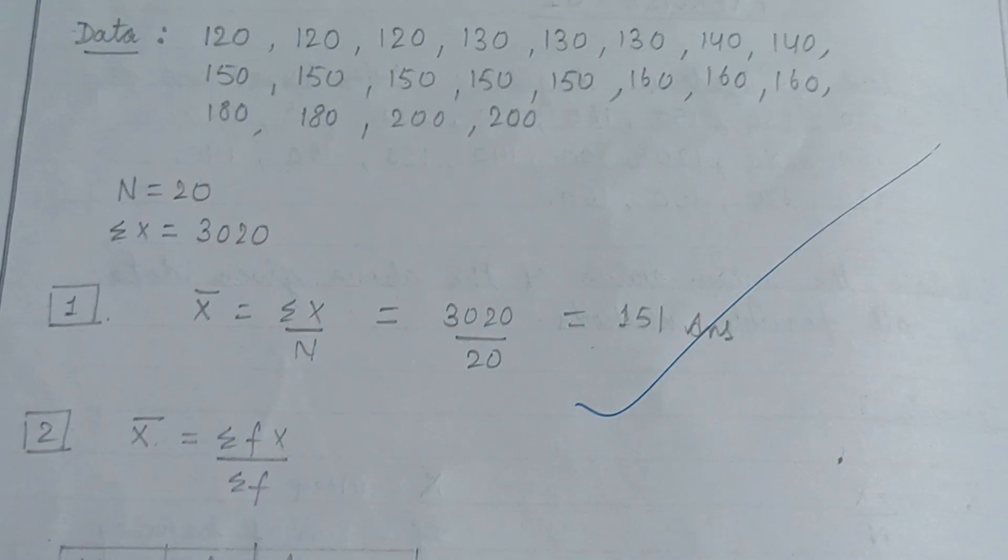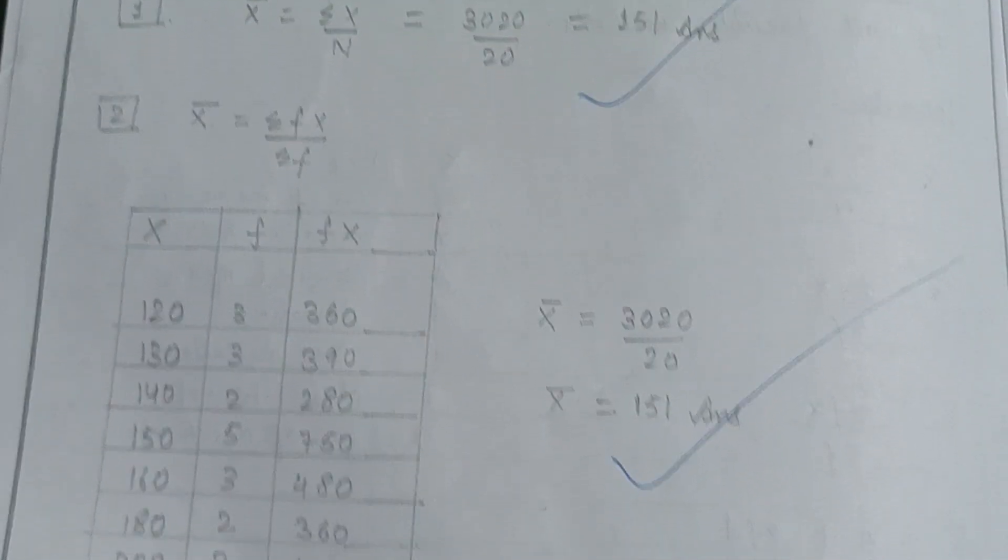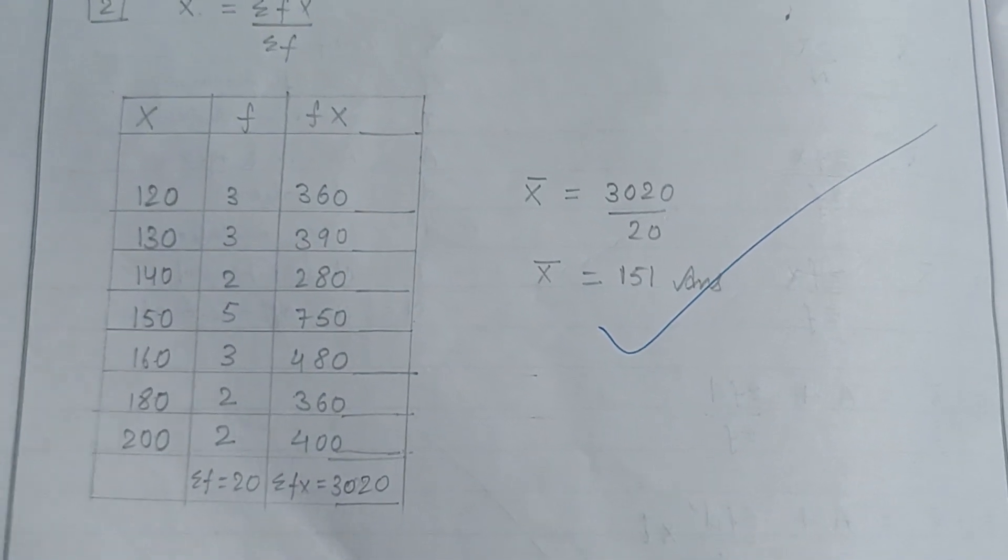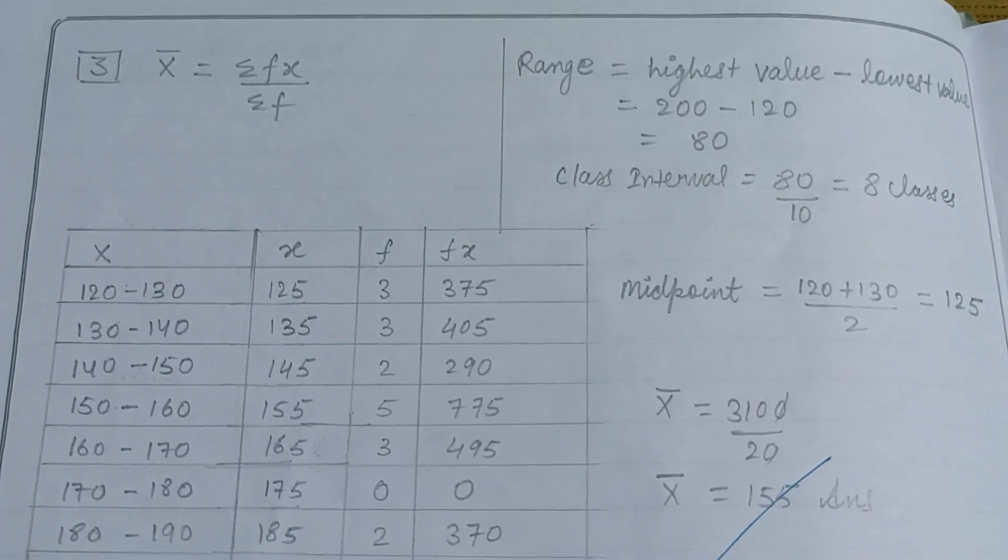The data is given where N equals the number of observations and Sigma X equals the mean value. It can be calculated by forming and calculating the Sigma F and Sigma FX. Range can be calculated.